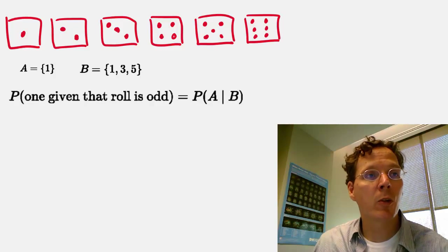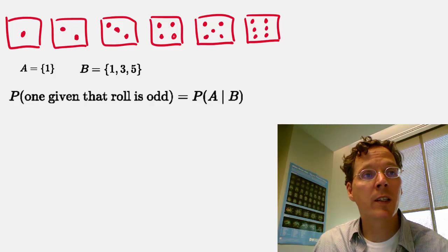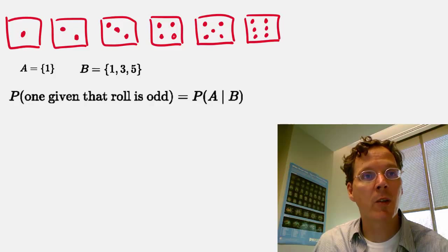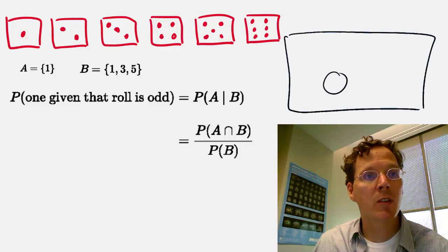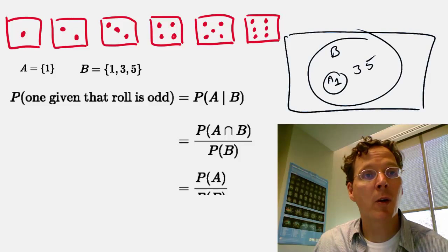In other words, we can say probability of getting a 1, given that we know that the roll is an odd number. That's the probability of A given B, which is the probability of A intersect B over the probability of B. In this case, A happens to lie entirely within B, so the probability of A intersect B is just the probability of A.